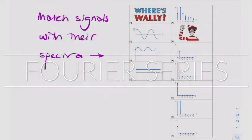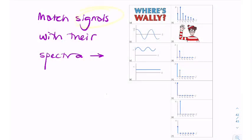In this question we have a series of time domain signals, and we need to match them with their spectra in the frequency domain. These are the spectra on the right. So we need to look at these signals one by one and match them with their frequency domain representations.